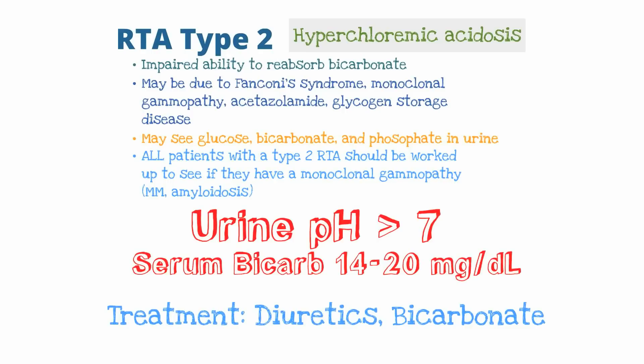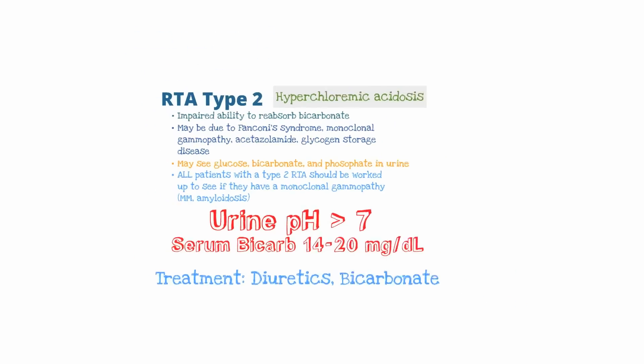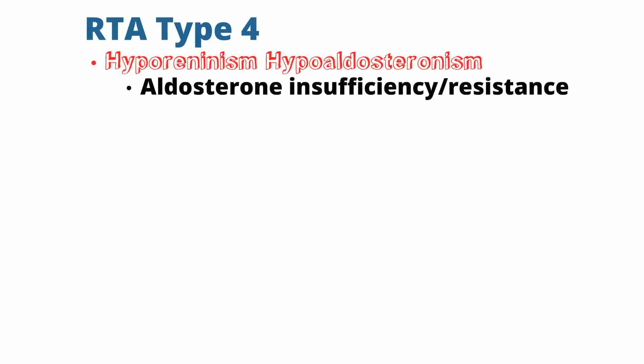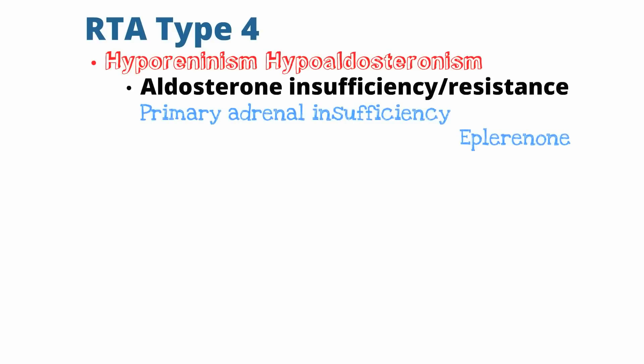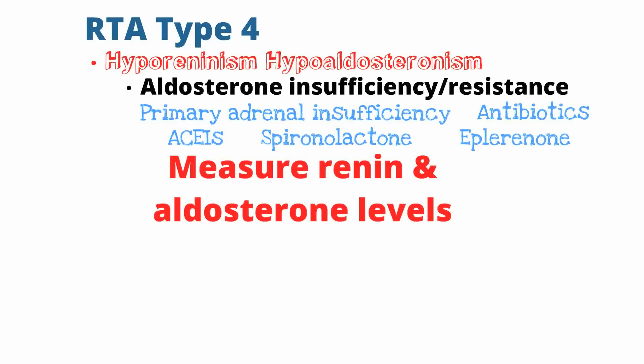Let's talk about renal tubular acidosis type 4. In RTA type 4 we have a hyporenin and hypoaldosteronism state due to either aldosterone insufficiency or resistance to the effects of aldosterone. That insufficiency or resistance can be due to primary adrenal insufficiency, antibiotics, ACE inhibitors, or spironolactone.